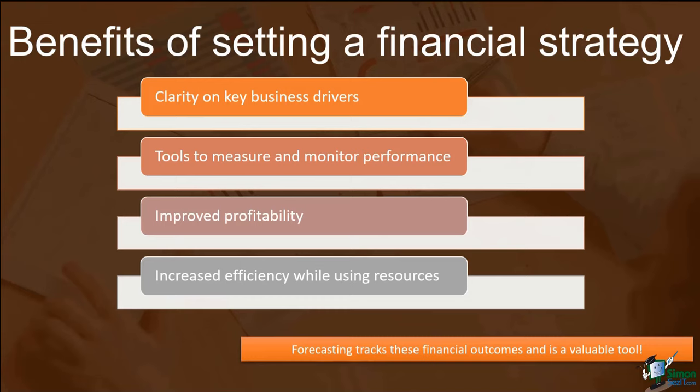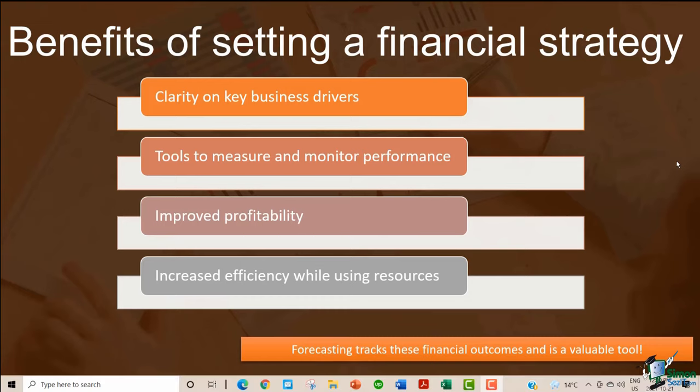Increased efficiency while using resources: monitoring your resources to budget expectations will ensure you get the most efficient use of business resources. For example, you can look at the time taken from customer order to order completion and then payment, and determine if the time frame can be shortened. This will mean the company receives payments quicker, staff move on to the next job earlier, and makes more money in the process. Forecasting tracks all these financial outcomes, thus making it a valuable tool. Now let's take a look at an Excel template that can be used for setting a financial strategy of a company.